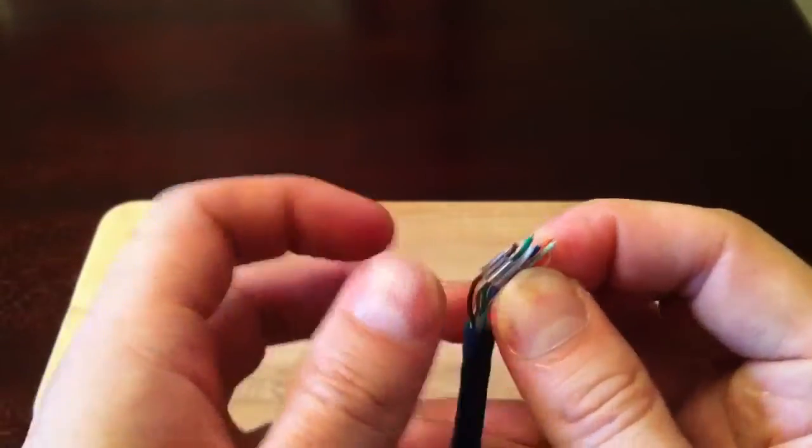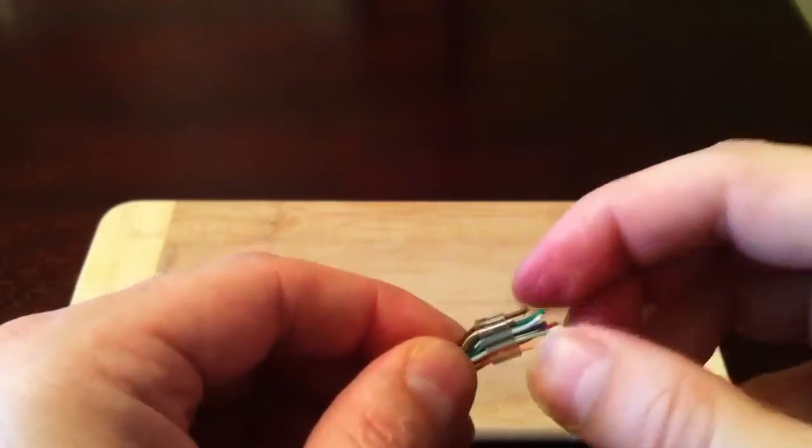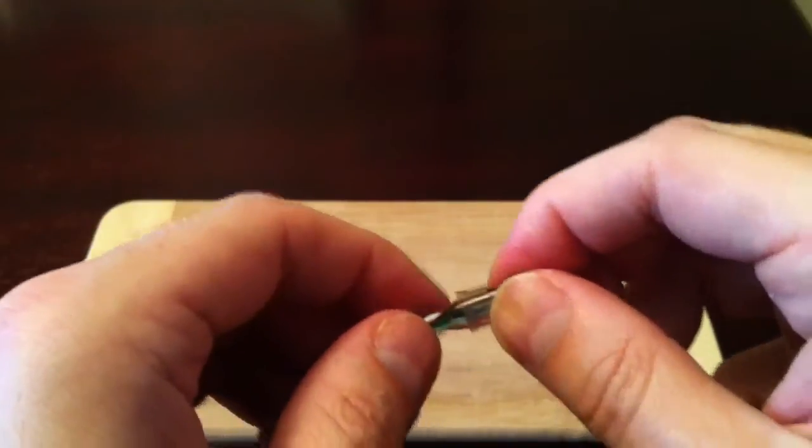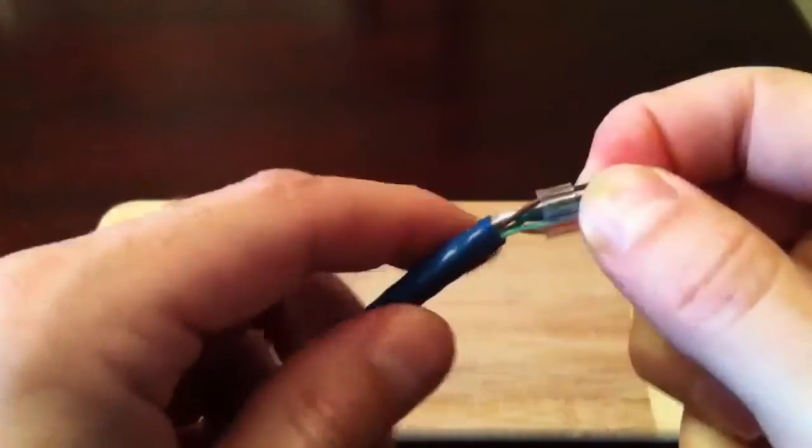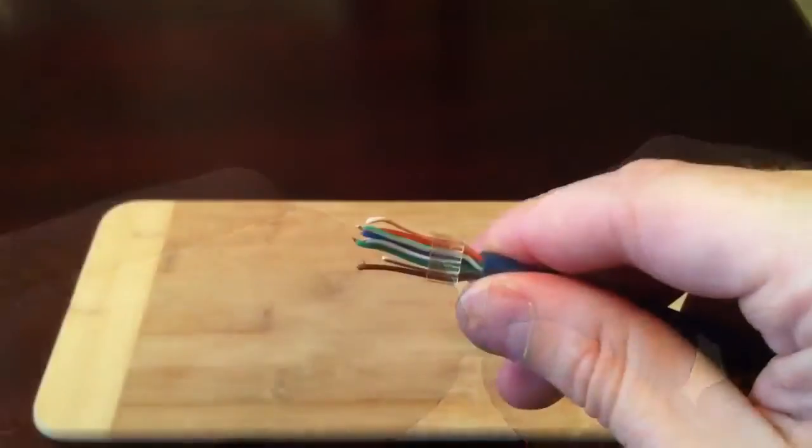Once you have inserted all eight wires, you'll want to make sure that you push the insert as close as possible to the cable jacket so that we get a nice tight fit inside of the actual CAT6 plug.